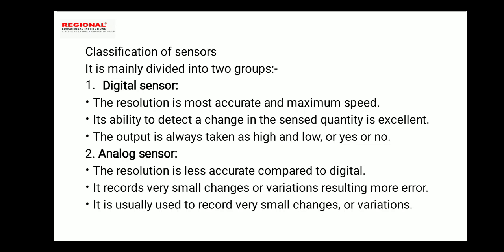The next classification of sensors includes digital sensors and analog sensors. A digital sensor has the most accurate resolution and maximum speed. Its ability to detect a change in the sensed quantity is excellent. The output is always taken as high or low — that is, 0 or 1, like a computer output.